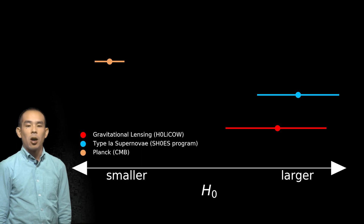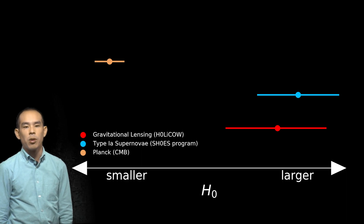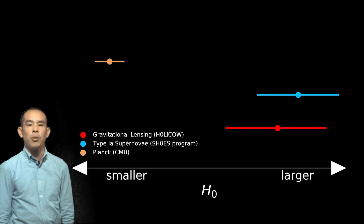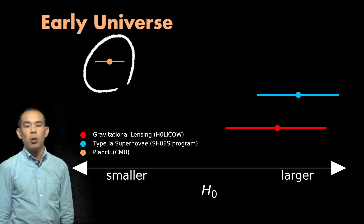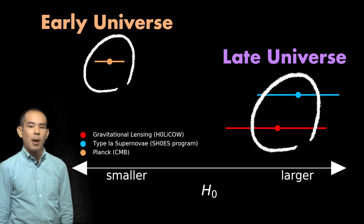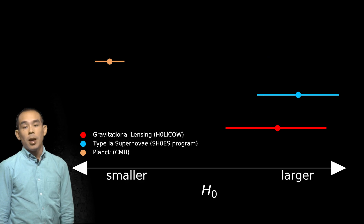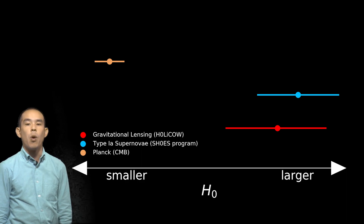Based on the distance between our measurement and the one from the CMB, as well as on the size of the error bars, we estimate that there's only about a 1 in 300 chance of this result being so far away from the CMB result. An interesting thing is that the CMB provides a measurement of H0 from the early universe, just after the Big Bang, while the supernovae and HOLYCOW results are both measurements from the late universe. If we combine our result with the supernova result, we find that the chance of this combined result being so different from the CMB result is about 1 in 10 million.